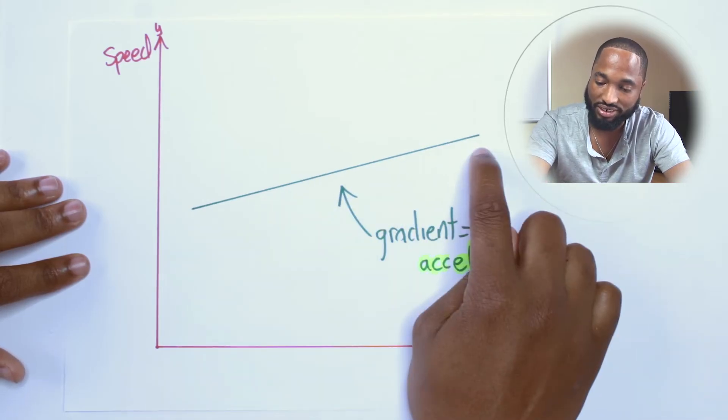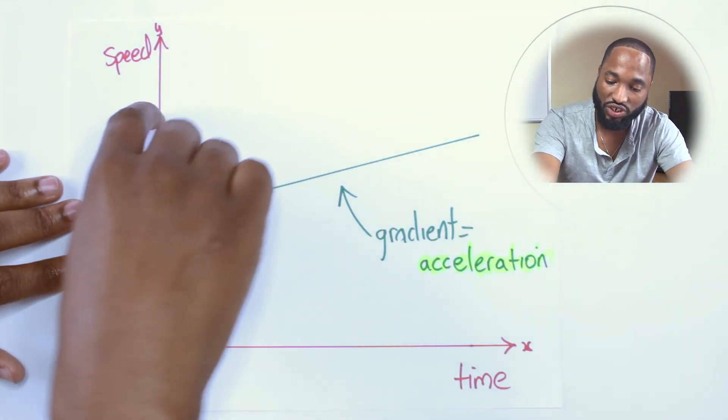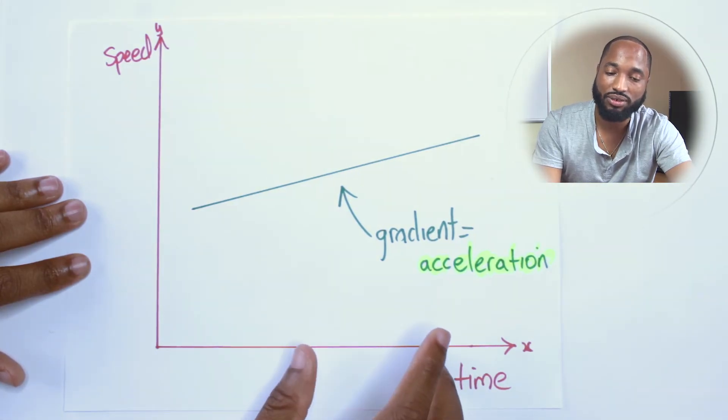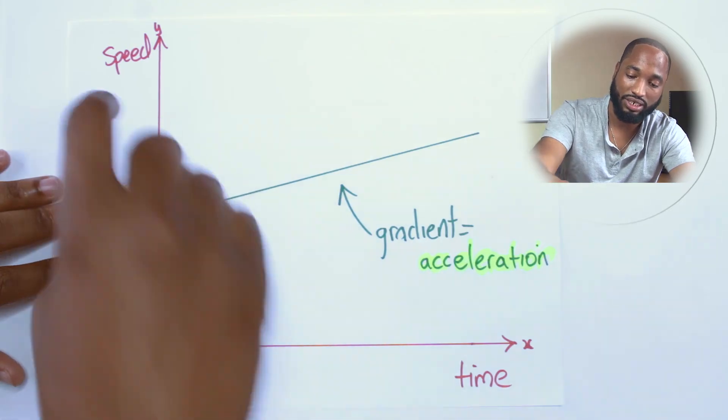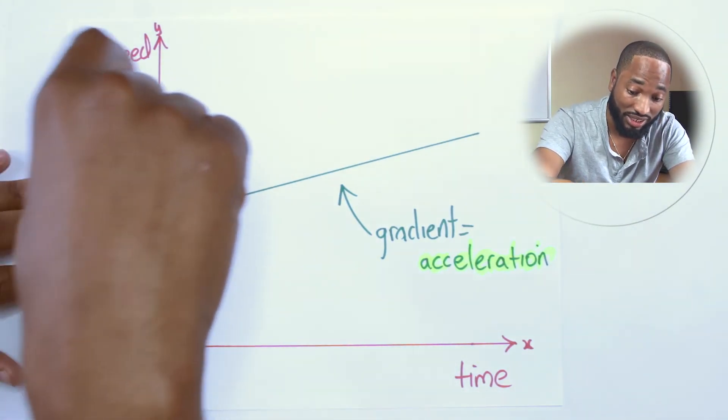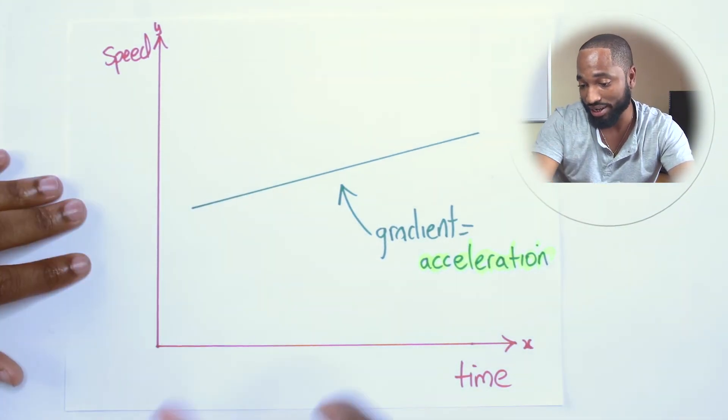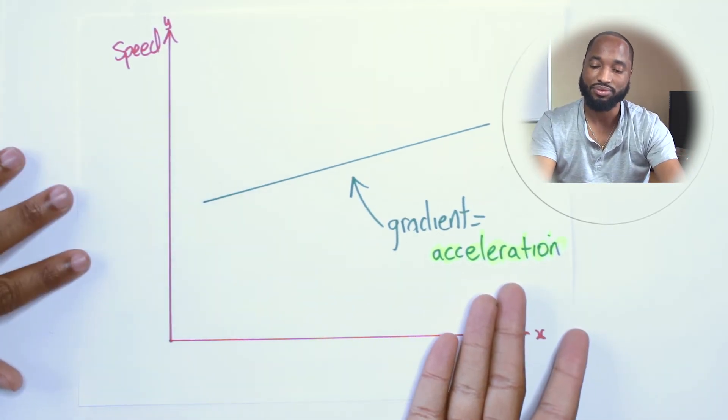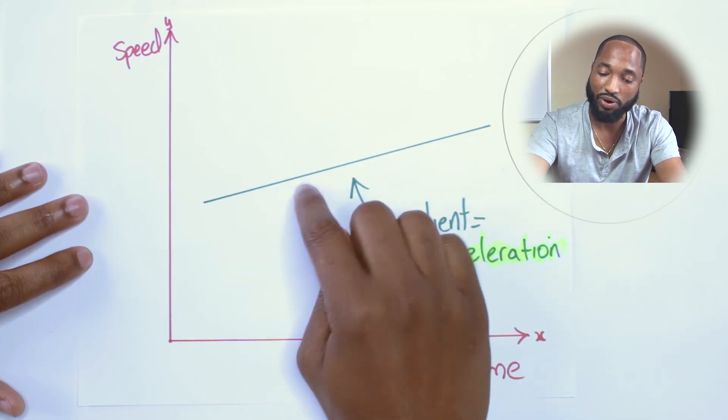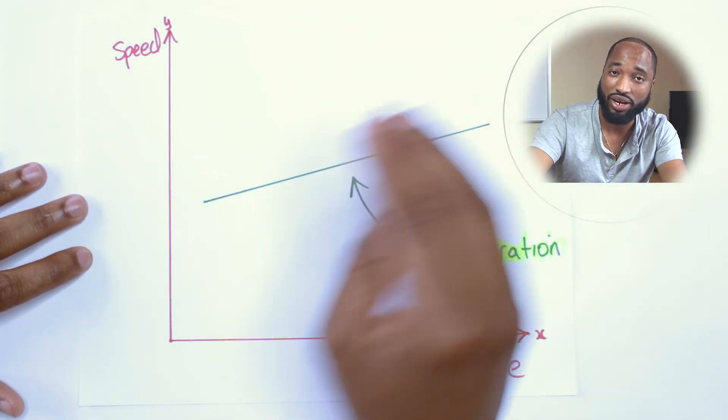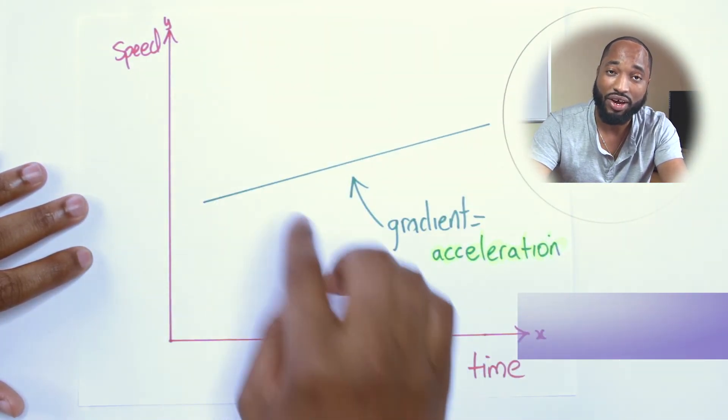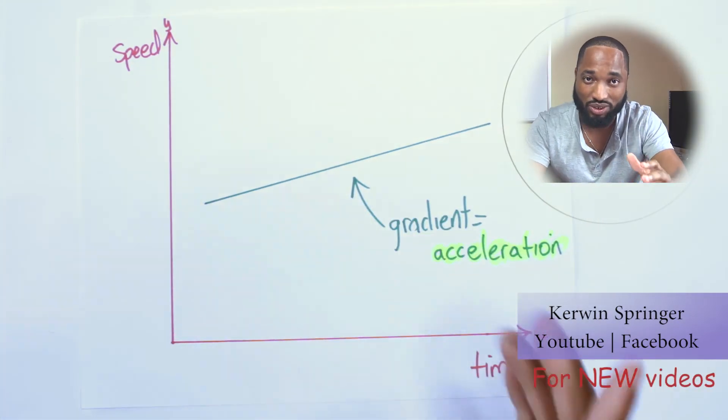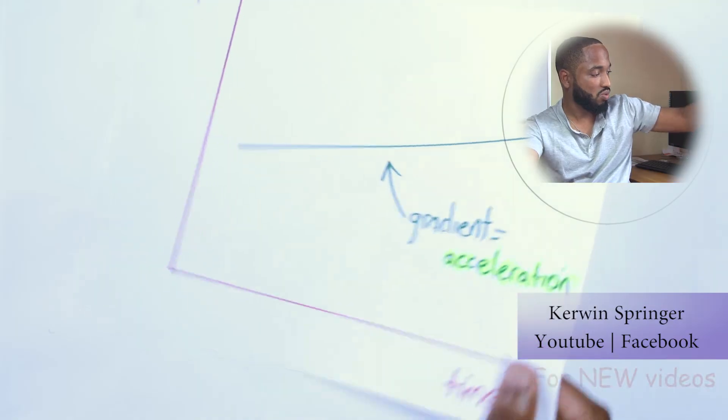The gradient is actually the change in y over the change in x. If you remember your gradient, gradient is y2 minus y1 over x2 minus x1. What is that? That is actually the speed divided by the time, which is the acceleration. So the gradient of this graph when you work out the gradient is actually the acceleration.